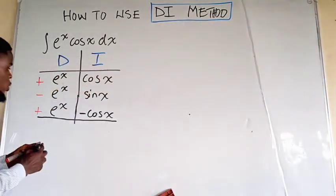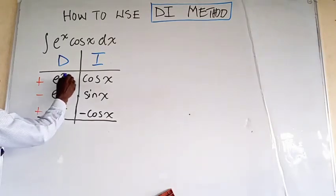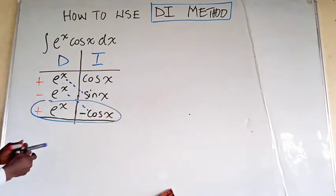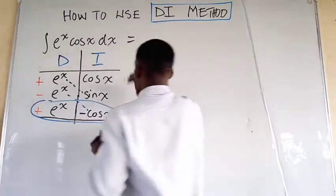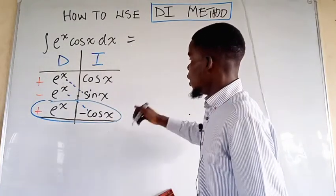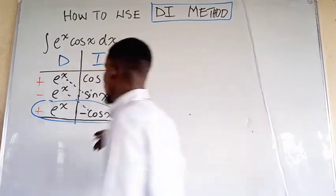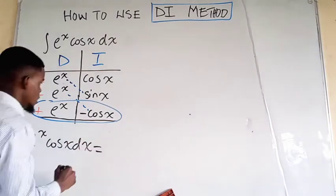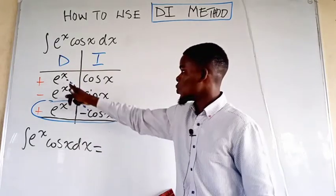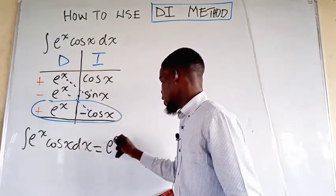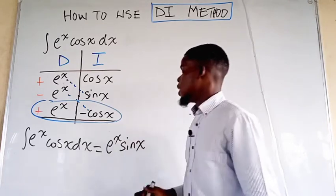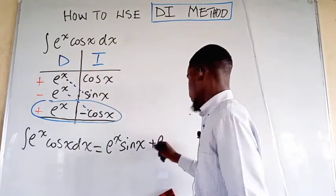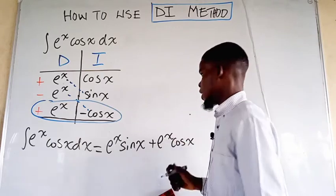So at this point we stop here, then go ahead and multiply the diagonals, and take the integral of the product of the last row as usual. We have that the integral of e to the power of x times cosine of x dx is — we multiply the diagonals — so e to the power of x times sine x. Then again we multiply: negative e to the power of x times negative cosine x comes to positive e to the power of x cosine of x.